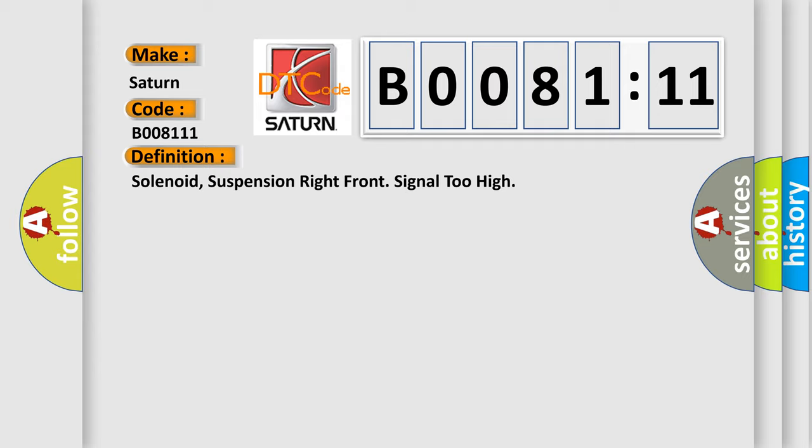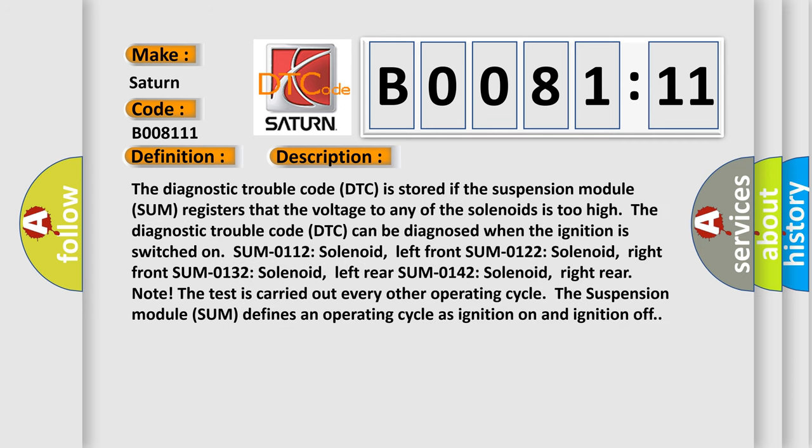And now this is a short description of this DTC code. The diagnostic trouble code is stored if the suspension module registers that the voltage to any of the solenoids is too high.